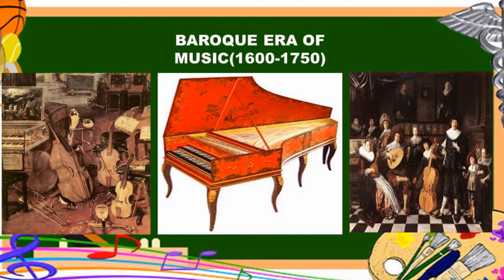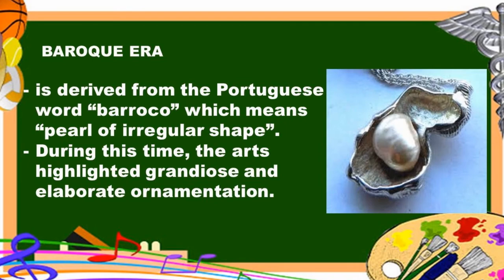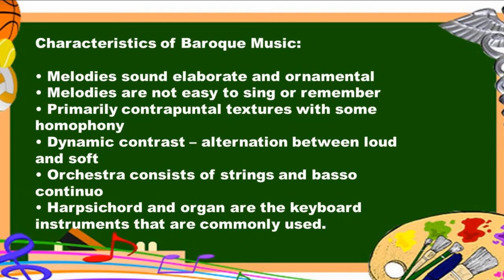Baroque Era of Music, 1600 to 1750. Baroque era is derived from the Portuguese word 'barroco,' which means pearl of irregular shape. During this time, the arts highlighted grandiose and elaborate ornamentation. Characteristics of Baroque music: melodies sound elaborate and ornamental; melodies are not easy to sing or remember; primarily contrapuntal texture with some homophony; dynamic contrast — alternation between loud and soft; orchestra consists of strings and basso continuo; harpsichord and organ are the keyboard instruments commonly used.